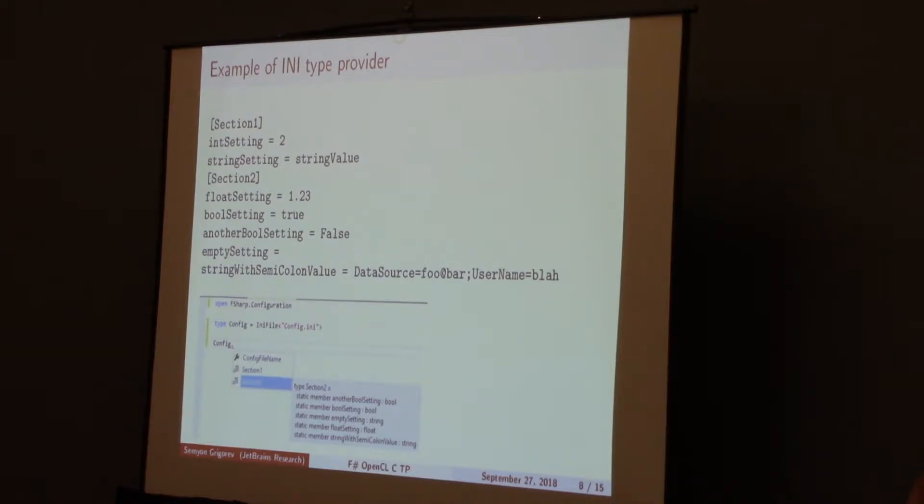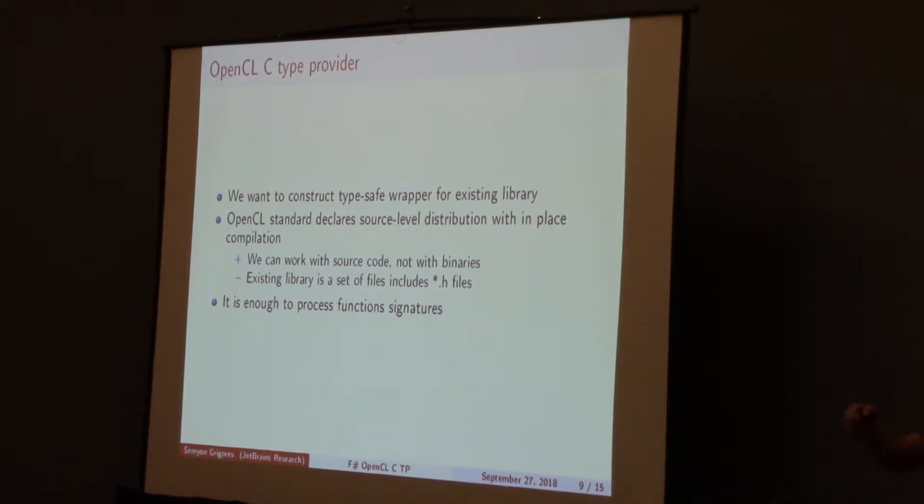Here you can see an example of INI type provider. The first part is content of our file. The second part is an example of usage. First of all, we should create a new type. This type has an argument. This argument is our file. And when the type is created, we can use it in the usual way. And here you can see also that the IDE provides some useful information. For example, these sections of our files and some information about it.